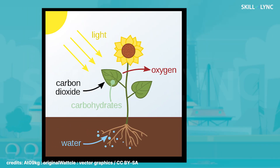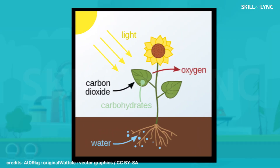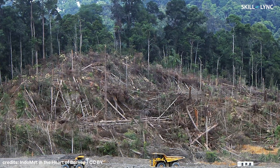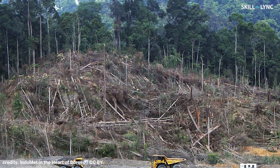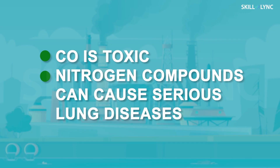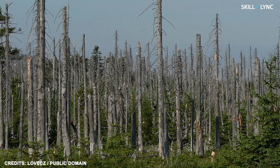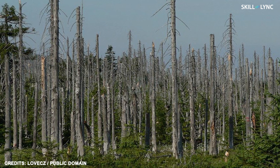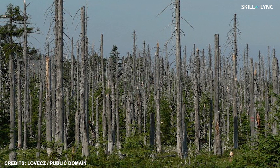Although carbon dioxide is needed by green plants for photosynthesis, large-scale deforestation has caused an increase in global carbon dioxide levels, thus resulting in global warming. Moreover, carbon monoxide emitted by power plants is toxic. The nitrogen compounds formed during combustion cause chronic lung illness as well, and if there is sulfur present in the fuel, then sulfur compounds will be emitted which cause health problems and acid rain.